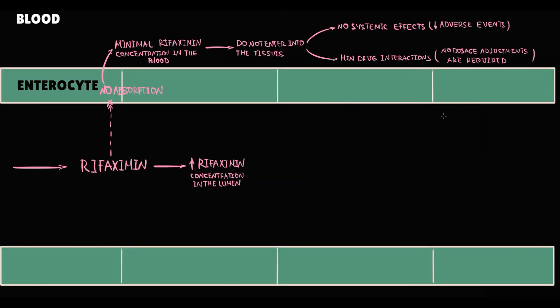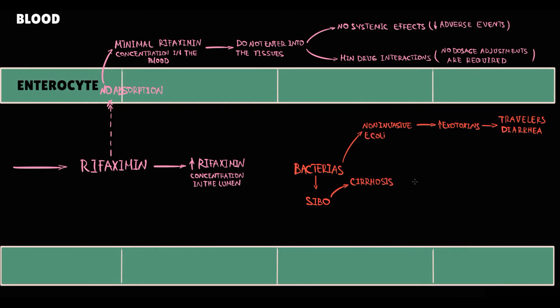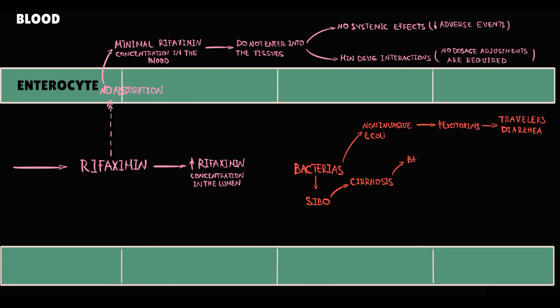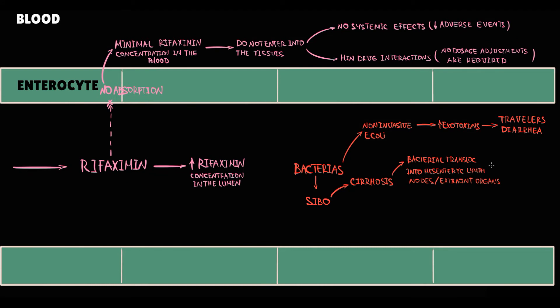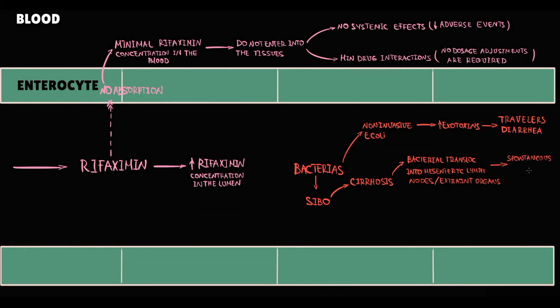Now to understand in which conditions rifaximin can be used, we have to know that the activity of some bacteria in the intestine can lead to some unfavorable complications. First of all, non-invasive E. coli by production of exotoxins can cause so-called traveler's diarrhea. Severe increase in the amount of pathogenic bacteria in the intestine is called small intestinal bacterial overgrowth. Cirrhosis is commonly associated with small intestinal bacterial overgrowth. And the problem is that in cirrhosis the gut barrier becomes more permeable. So bacteria in cirrhosis can translocate from the lumen of the intestine into the mesenteric lymph nodes or other extra-intestinal organs. And this greatly increases the risk of complications, for example, the risk of spontaneous bacterial peritonitis.